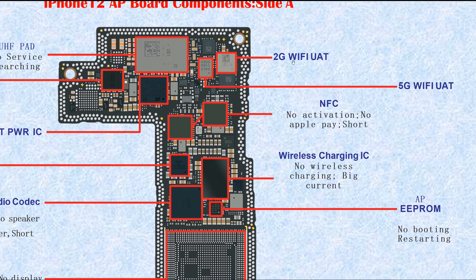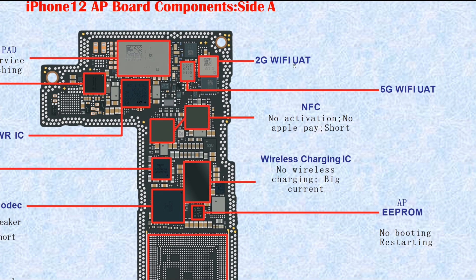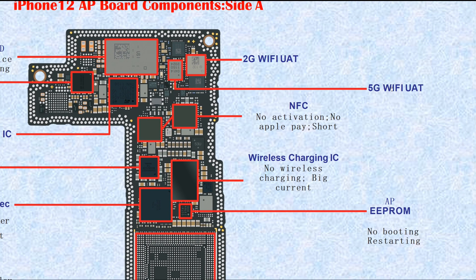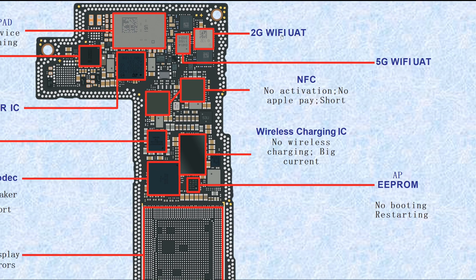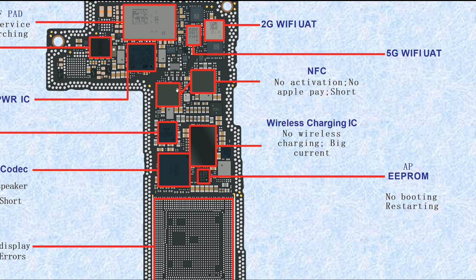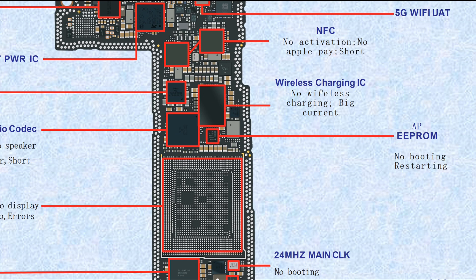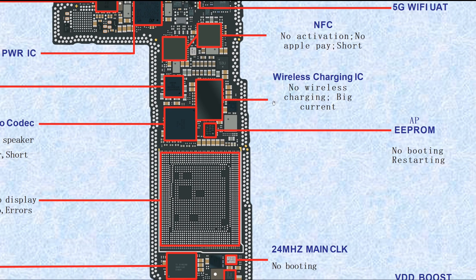From here, this one is the 2G WiFi UAT — UAT means up antenna. This is the 2G WiFi up antenna. This one is the 5G WiFi up antenna. If these are broken, it causes WiFi abnormal. These two are for NFC — if NFC is broken, it causes no activation or no Apple Pay. This one is wireless charging IC — if broken, it causes no wireless charging or big current.